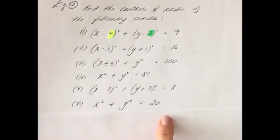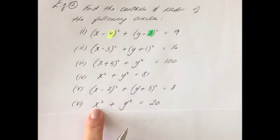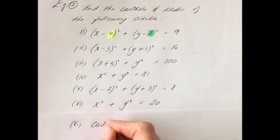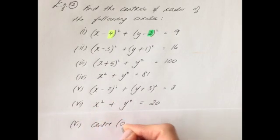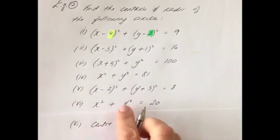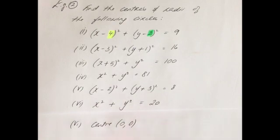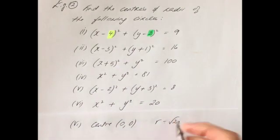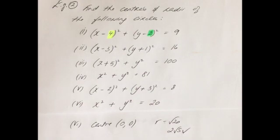For x² + y² = 20: again nothing has been subtracted from x, so the x-coordinate of the center is 0. Nothing has been subtracted from y, so the y-coordinate is also 0. The radius is the square root of 20, which doesn't simplify to a nice whole number — on the calculator it gives 2√5. That is the radius.